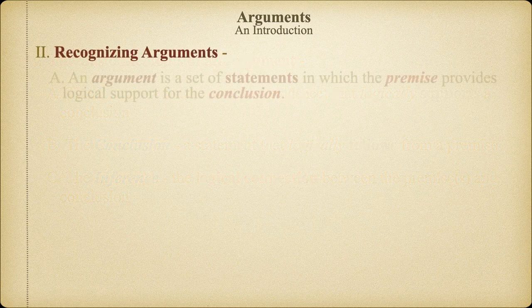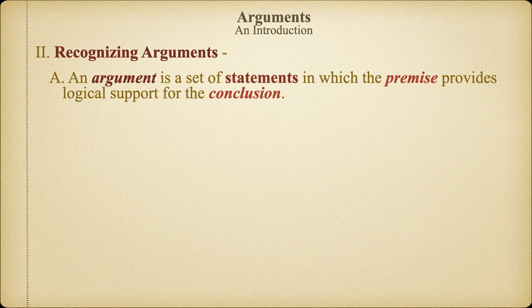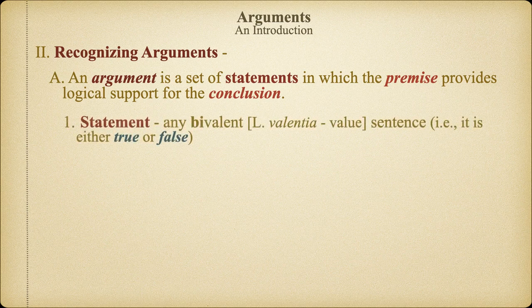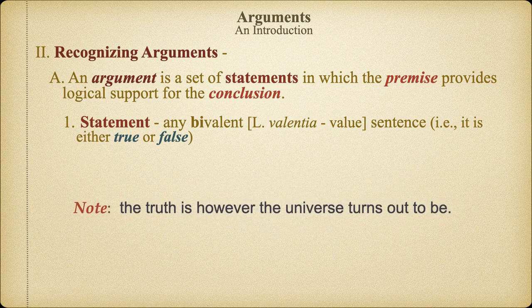We concluded the last video by noting that premises and conclusions are statements, and that we needed to define just what a statement is in order to more fully understand the nature of an argument. A statement is properly defined as any bivalent sentence. Bivalence means having two possible values — in this case, truth values. So any sentence that can be assigned a truth value of true or false is a statement. For a statement to be true just means that it accurately corresponds to however the universe turns out to be — not how we believe it to be, or how we would like it to be, but rather how it actually is.